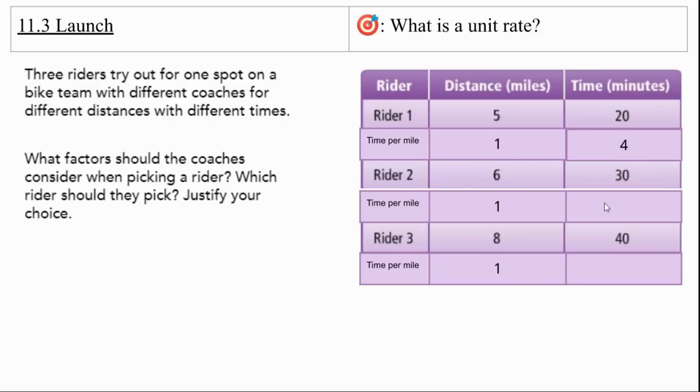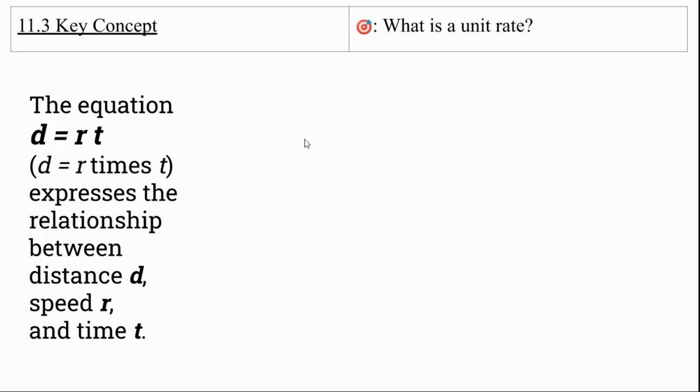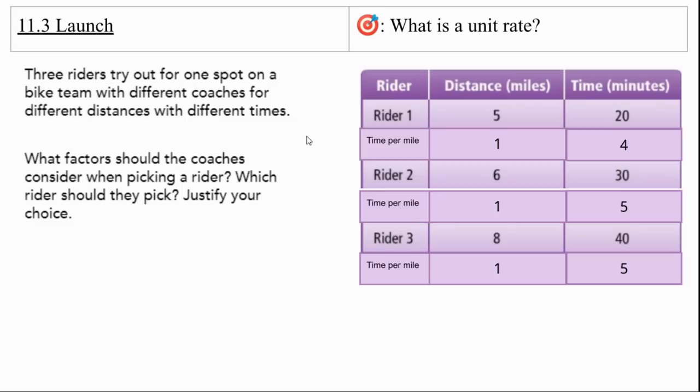Rider two, we're going to divide both of these by six. And we're going to get five minutes per mile. And on rider three, we're going to divide both of those by eight. So we're going to get five minutes per mile. So which rider should we pick? Rider one.